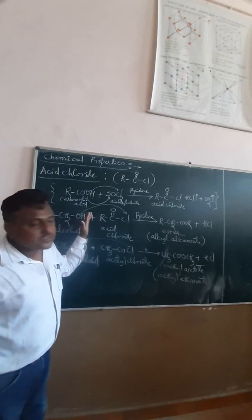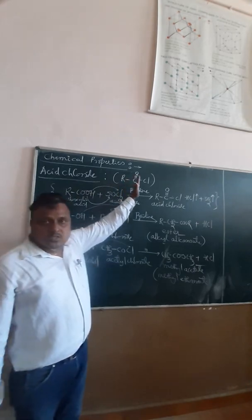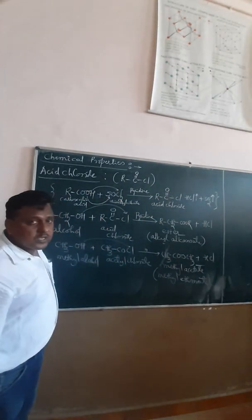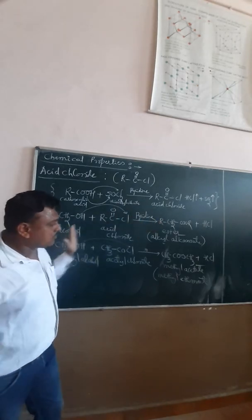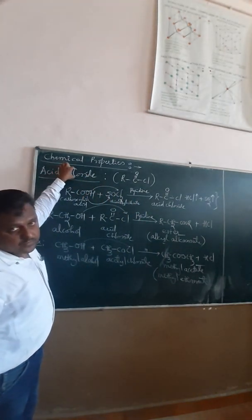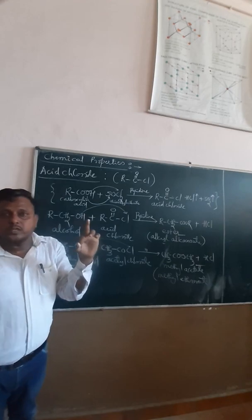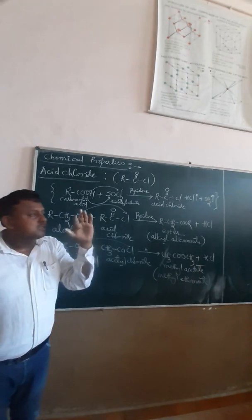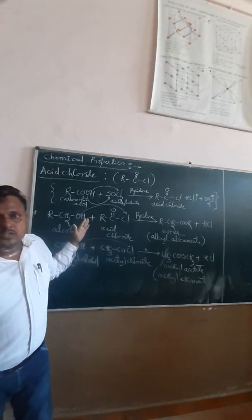In this video, friends, we have covered three reactions. First: alcohol reacts with metals to form alkoxides. Second: esterification using carboxylic acid. Third: formation of esters using acid chloride. We have three concepts. Complete here and continue in the next video. Thank you so much.